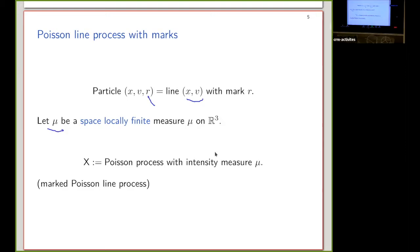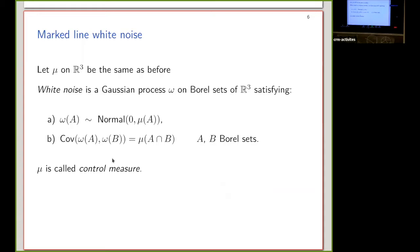Now I consider a Poisson process with intensity measure mu — you can think of this as a Poisson process in R³, or R² plus the mark, it is the same thing. With the same measure mu I define a marked line white noise: a Gaussian process omega on Borel sets of R³ such that omega of A is Gaussian with variance mu of A, and the covariance of omega(A) and omega(B) is mu of the intersection. This measure mu is called the control measure.